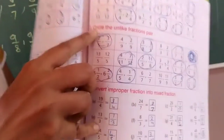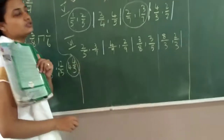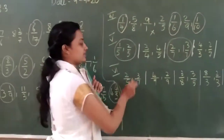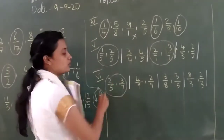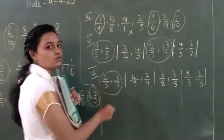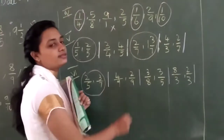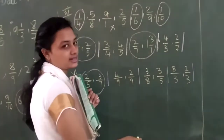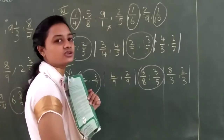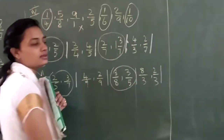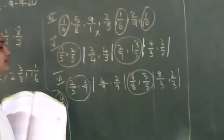Sixth question: circle the unlike fractions. Unlike fractions have different denominators. The first one: five and seven — different denominators, so circle it. Nine and nine — same, so it becomes a like fraction, do not circle it. Eight and five — yes, different denominators, so it is an unlike fraction. Three and three — like fraction, do not circle. So we have completed the sixth question.